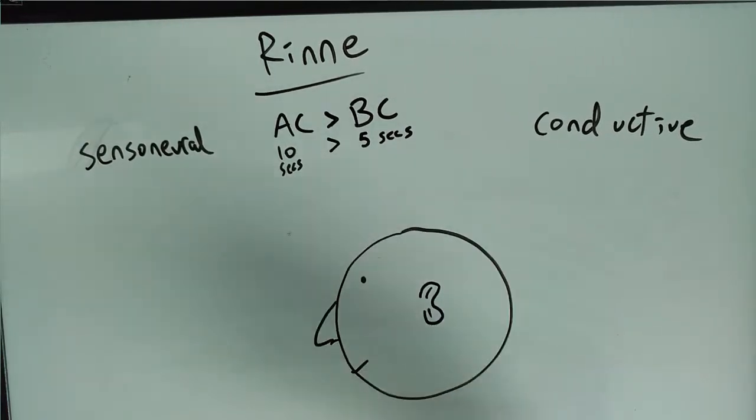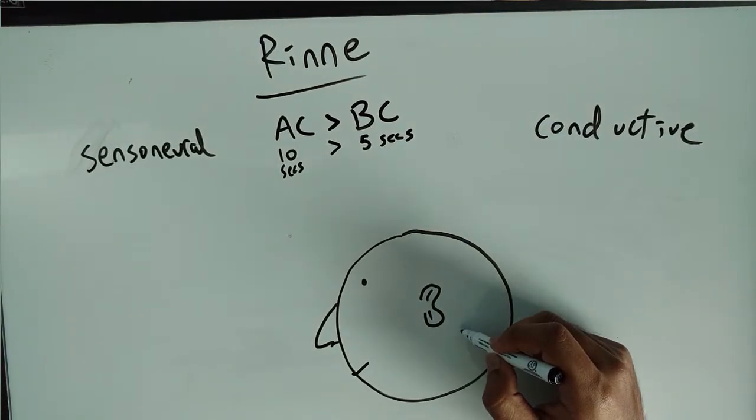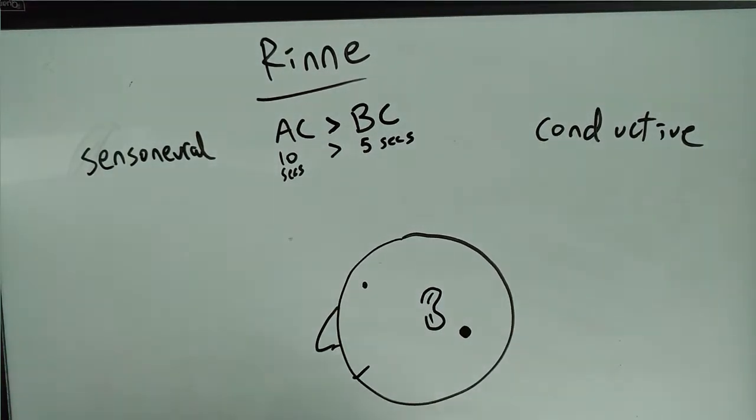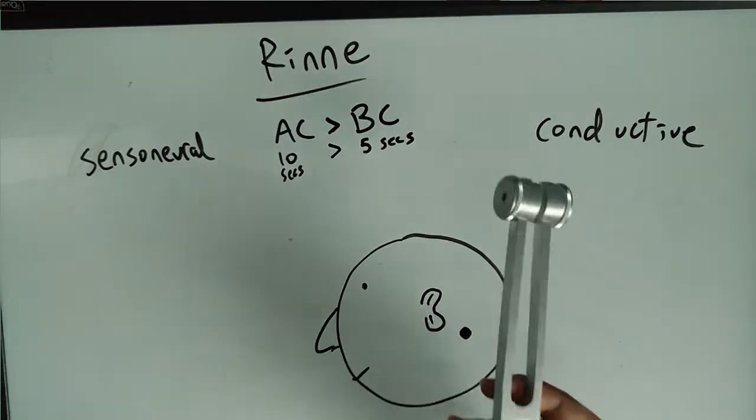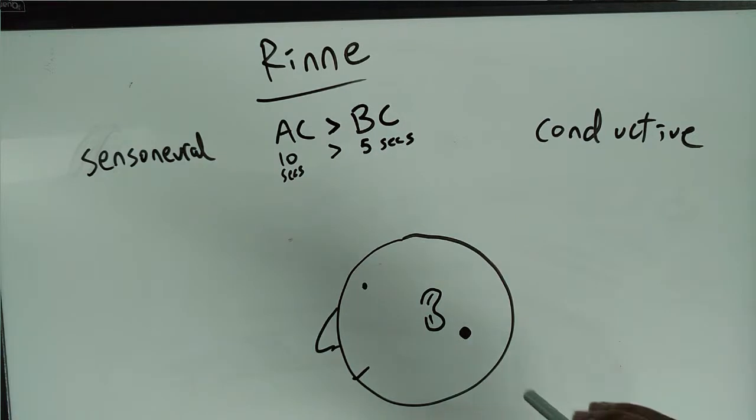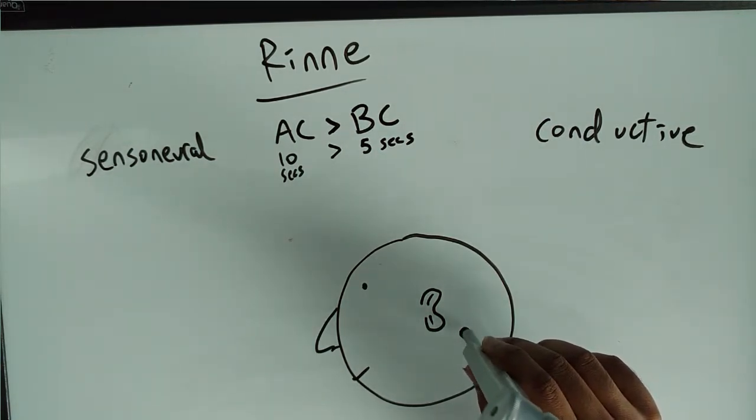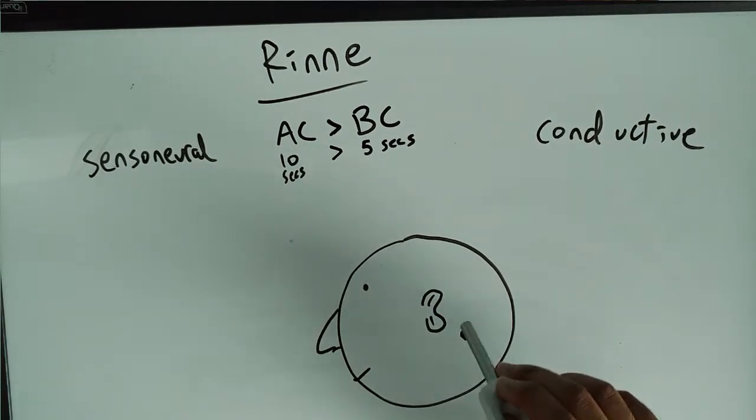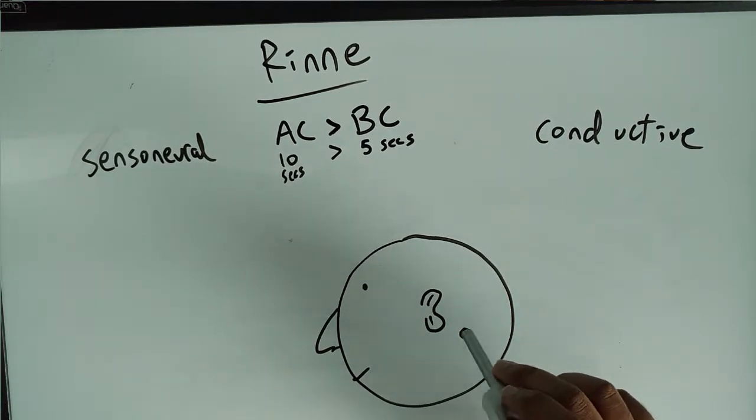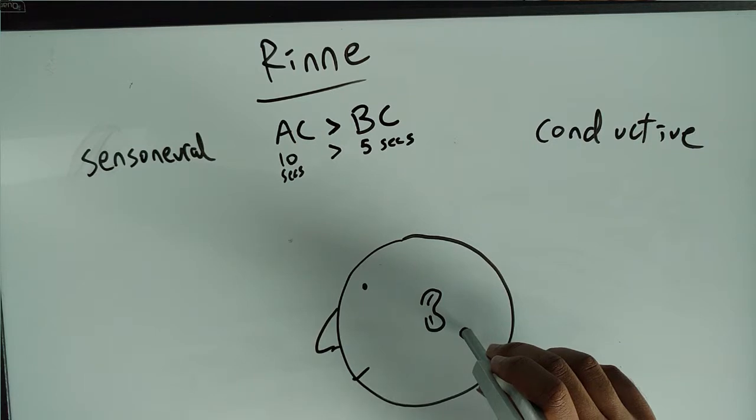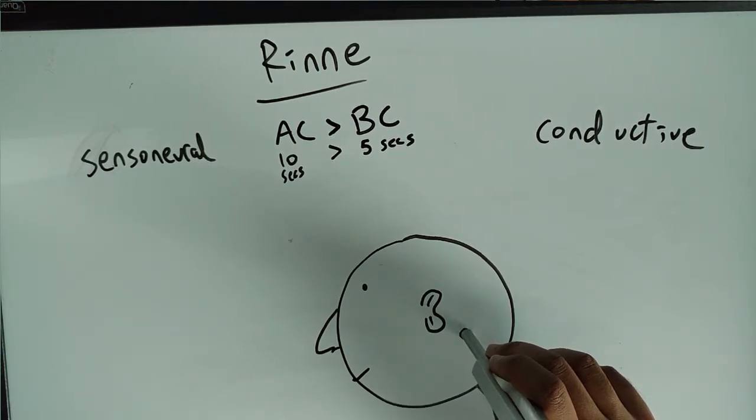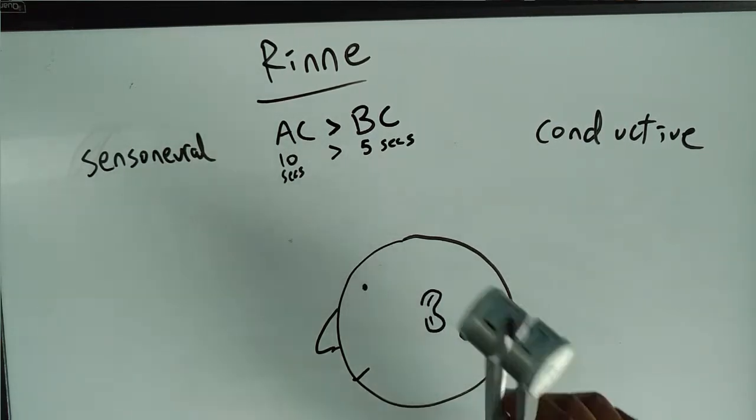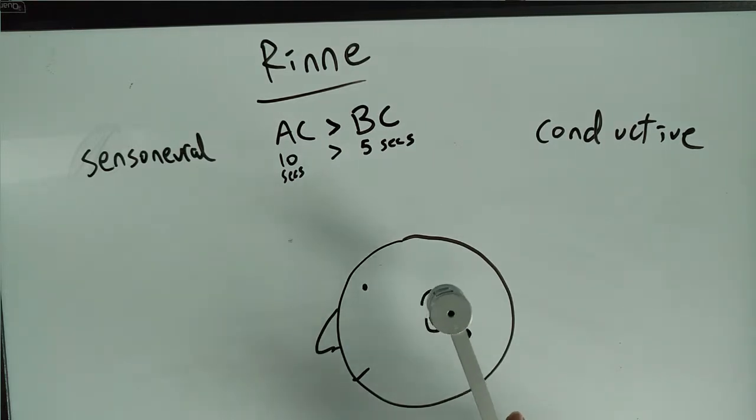There's a little bone right behind the ear. So when you do the Rinne Test, you take your tuning fork, you activate it, you put it at the bone behind their ear. They would hear the vibration. When they stop hearing it, they'll let you know, and then you put this right next to their ear without touching. They're still hearing it, and then they'll say stop hearing it.